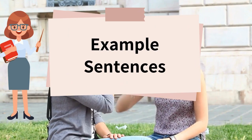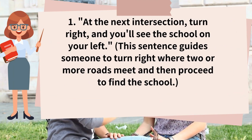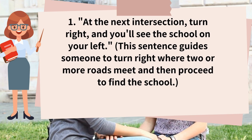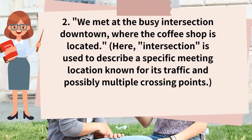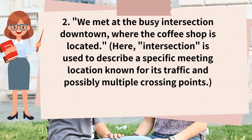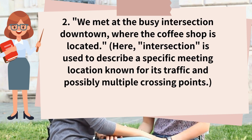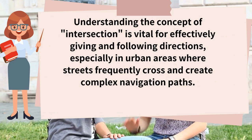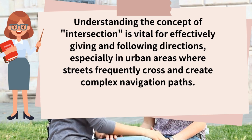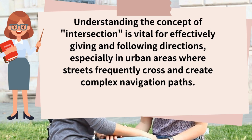Example sentence 1: At the next intersection, turn right, and you'll see the school on your left. This sentence guides someone to turn right where two or more roads meet and then proceed to find the school. Example sentence 2: We met at the busy intersection downtown, where the coffee shop is located. Here, intersection is used to describe a specific meeting location known for its traffic and possibly multiple crossing points. Understanding the concept of intersection is vital for effectively giving and following directions, especially in urban areas where streets frequently cross and create complex navigation paths.